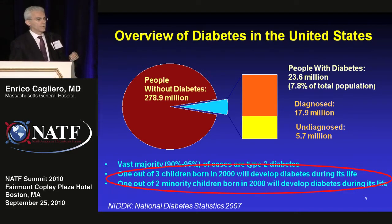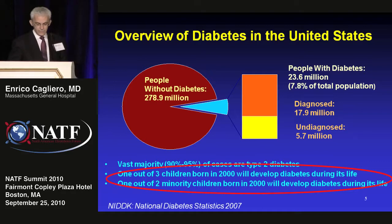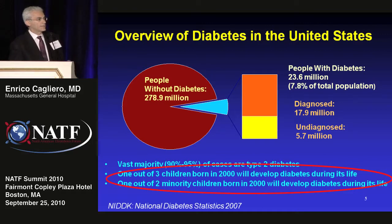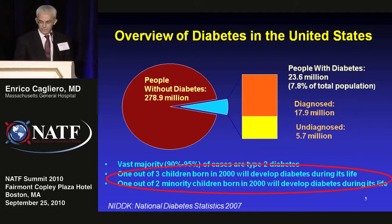Most of the data I'll show refer to type 2 diabetes, which is 90 to 95% of diabetes in the U.S. What is really alarming is that current projections show one out of three kids born in 2000 will develop diabetes unless we do something about it. And because minority children have a higher genetic propensity for type 2 diabetes, one out of two minority kids will develop diabetes during their lifetime — a huge societal problem.